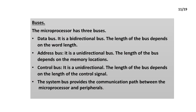The microprocessor has three buses. The Data Bus is a bi-directional bus; its length depends on the word length. The Address Bus is a unidirectional bus; its length depends on the memory locations. The Control Bus is unidirectional; its length depends on the length of the control signal. The system bus provides the communication path between the microprocessor and peripherals.